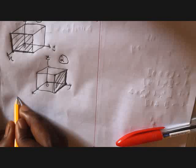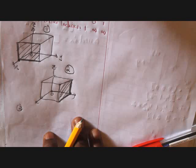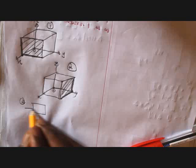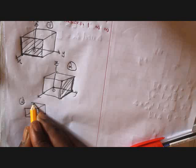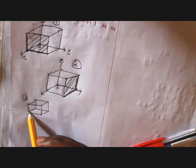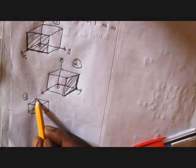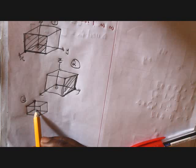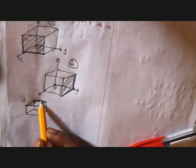For number three, the Miller indices are (001). So x is 0, y is 0, and z is 1. Since z intercepts at 1, the plane is parallel to x here and parallel to y here. Add the points together and the Miller plane will be here.